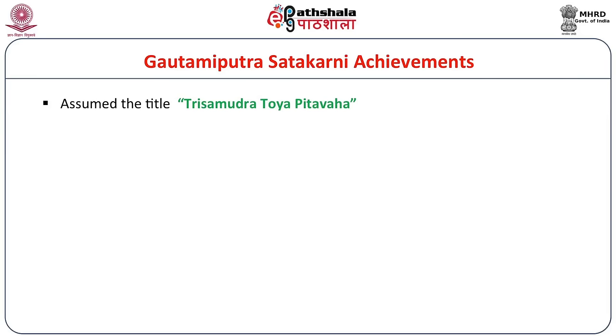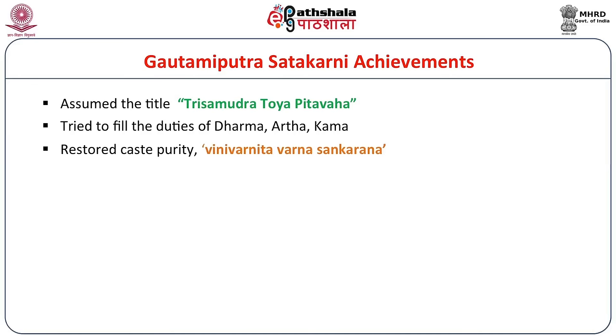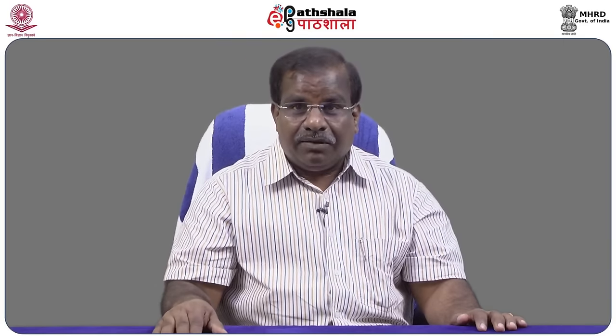In the Nasik inscription, Gautami Balasri mentioned details about his achievements and character. He assumed the title Trisamudra-toya-pitavahana — meaning the king who watered his horses in three oceans. He tried to fulfill the duties of Dharma, Artha, and Kama. He restored caste purity by assuming the title Varna-Sankara-Nivarana. He patronized both Brahmanism and Buddhism and assumed the title Eka Brahmana. Thus Gautamiputra Satakarni occupies an important place in Shatavahana history and in Indian history in general.